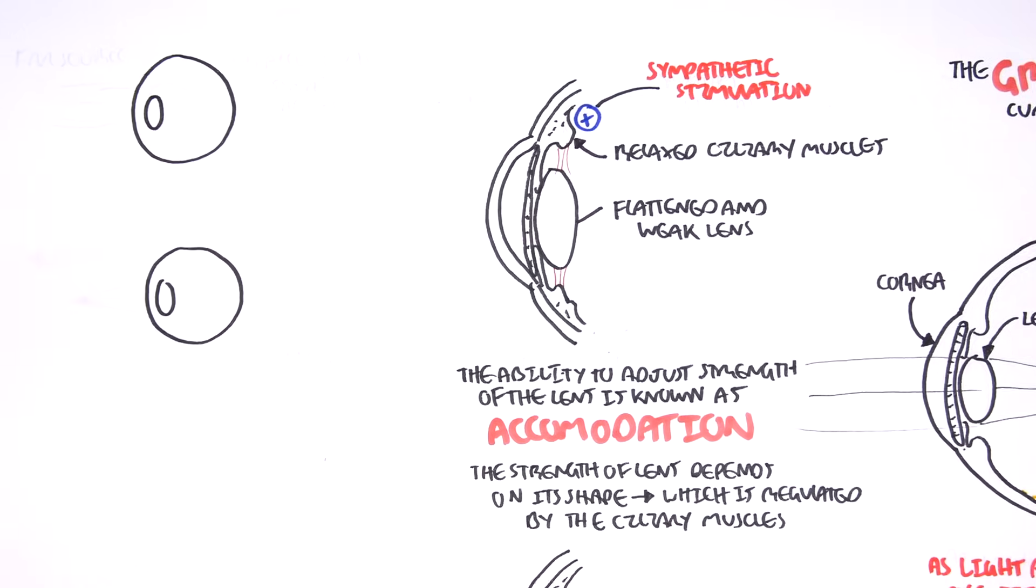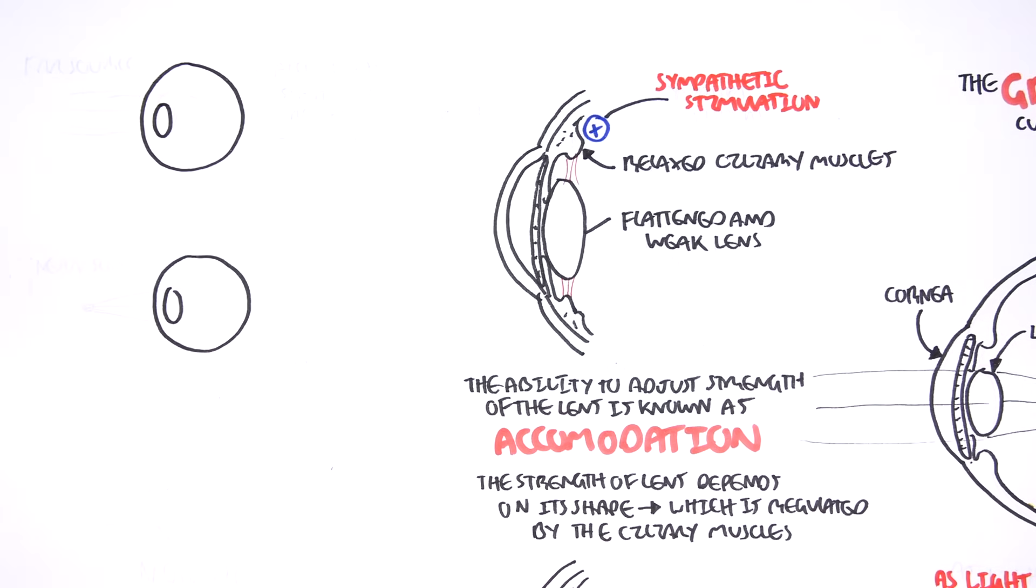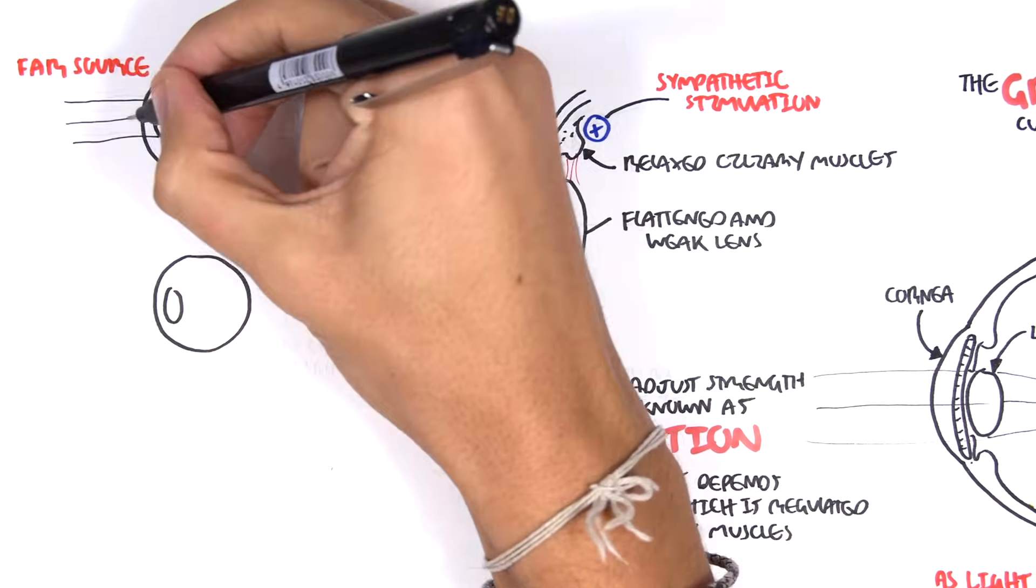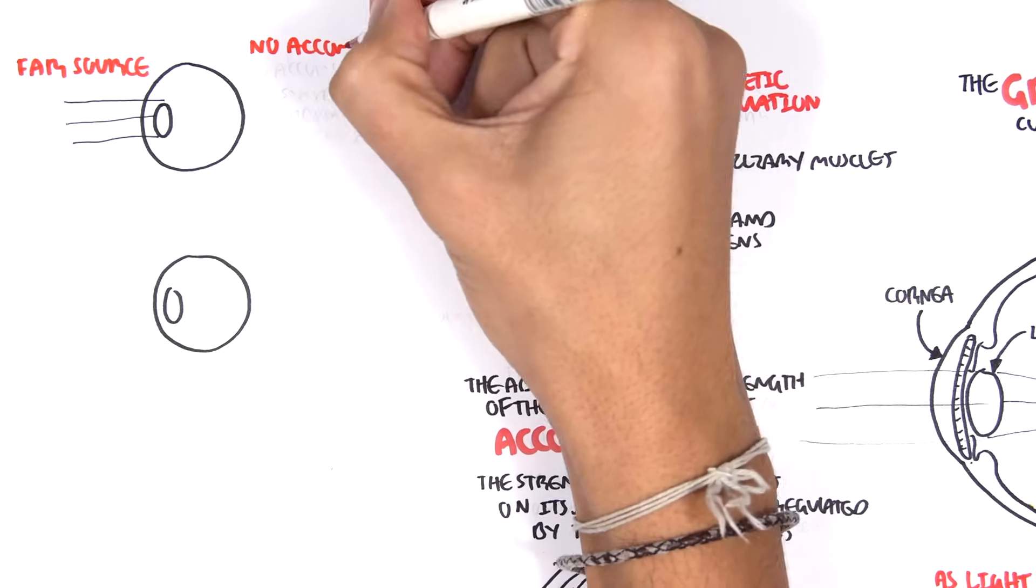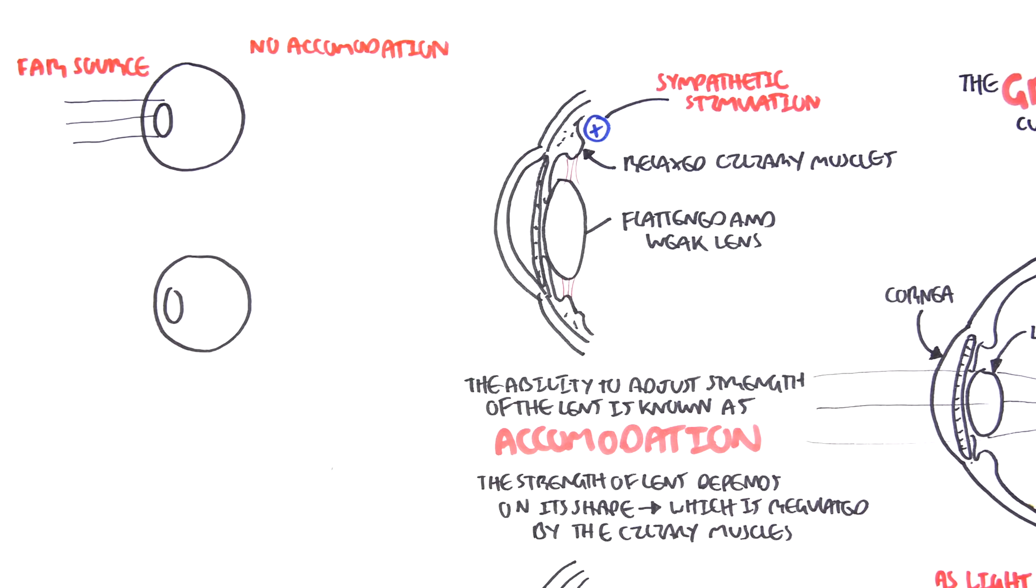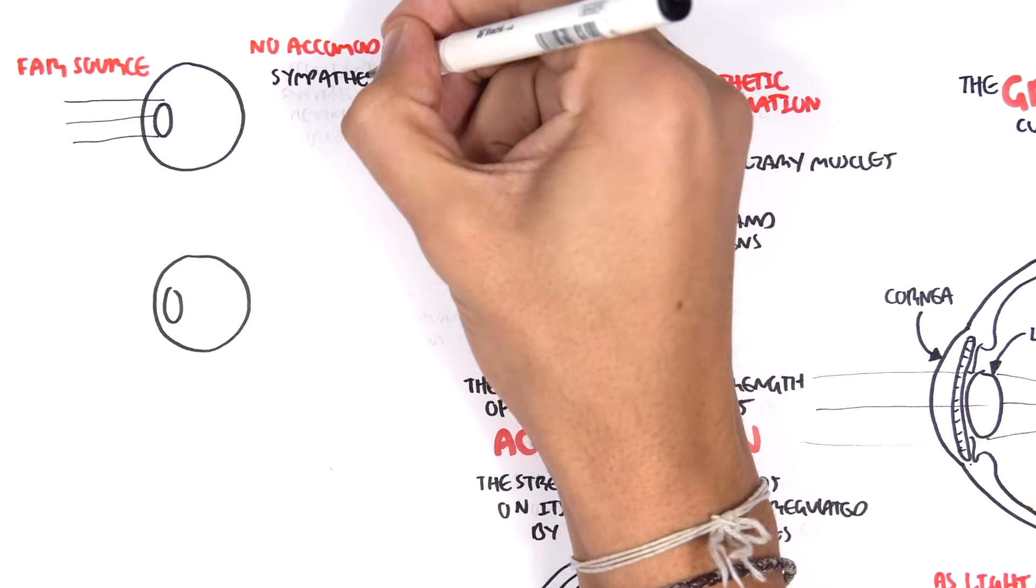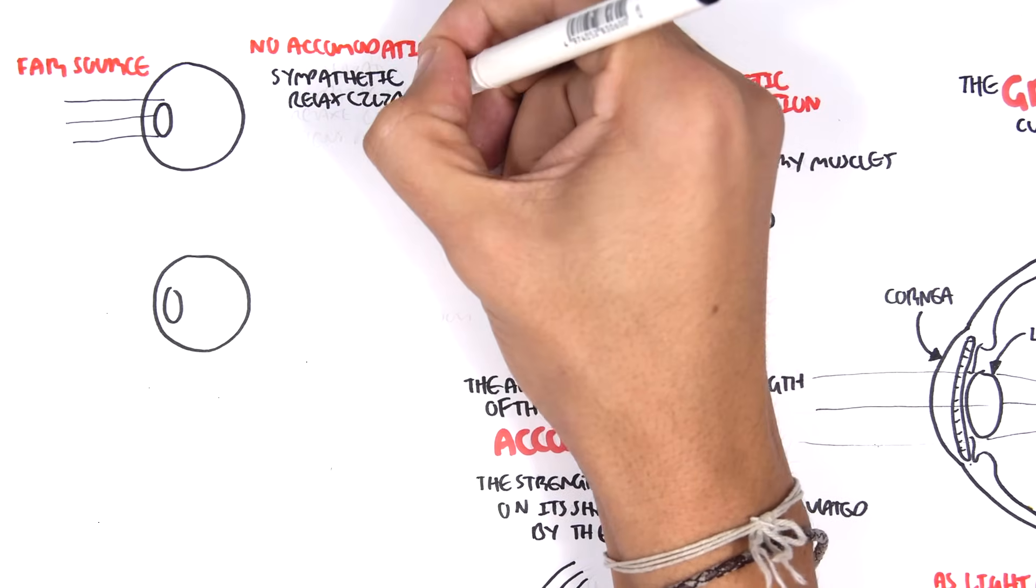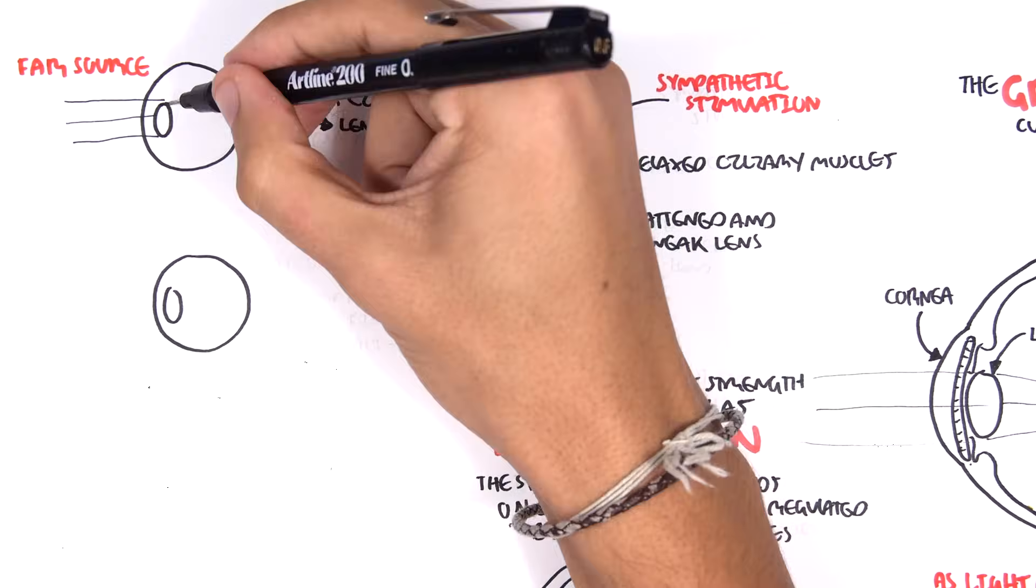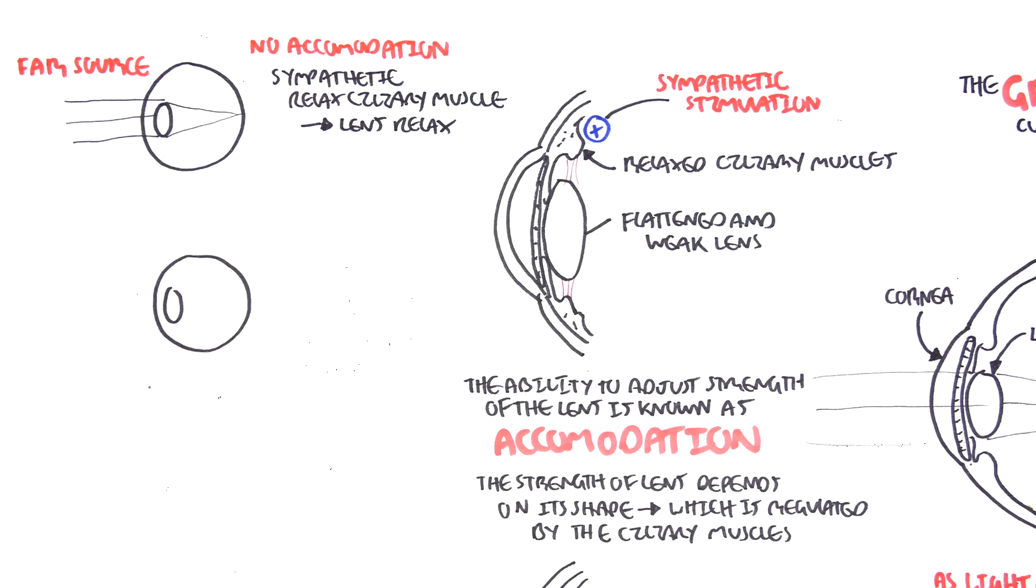If you see an object far away, a far source, there is no accommodation and your lens do not need to change. When there is no accommodation, the ciliary muscles are relaxed and the lens is relaxed. Light that enters the eye is refracted by the lens and hits the retina, and all is good.